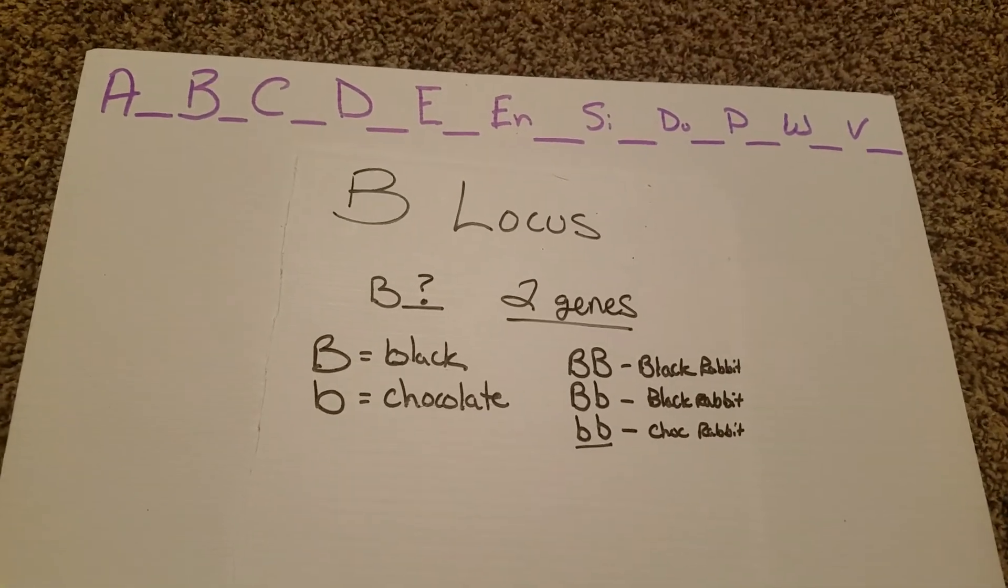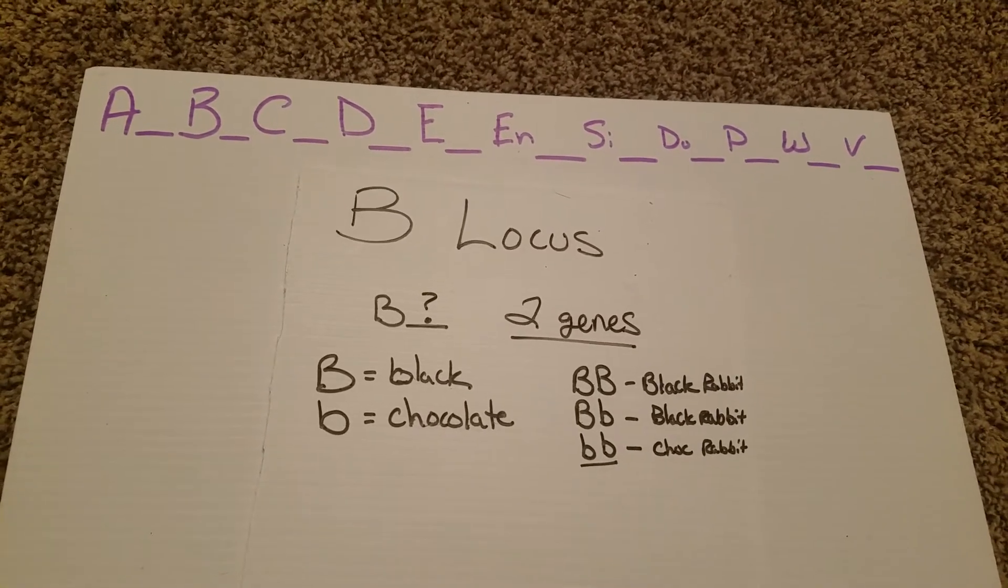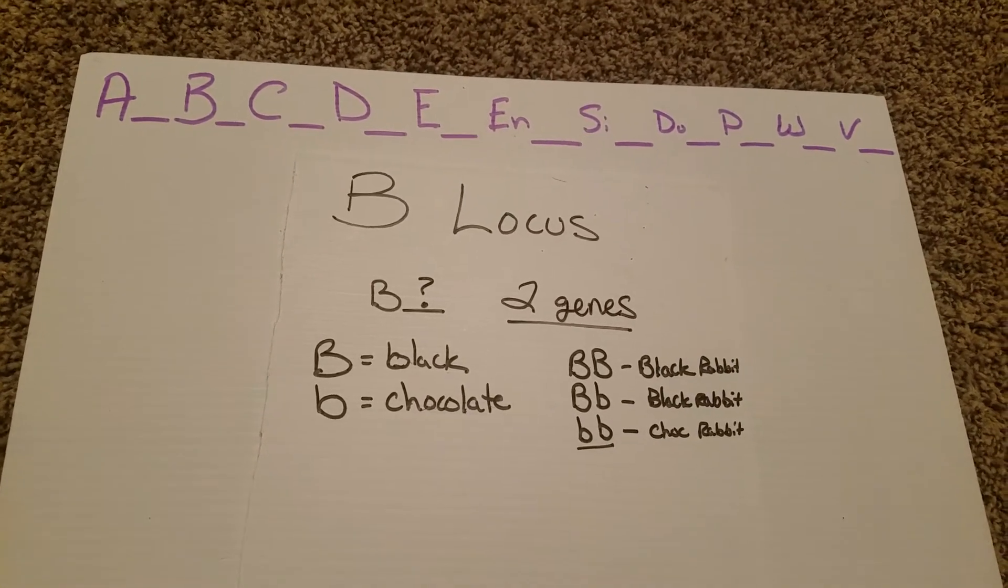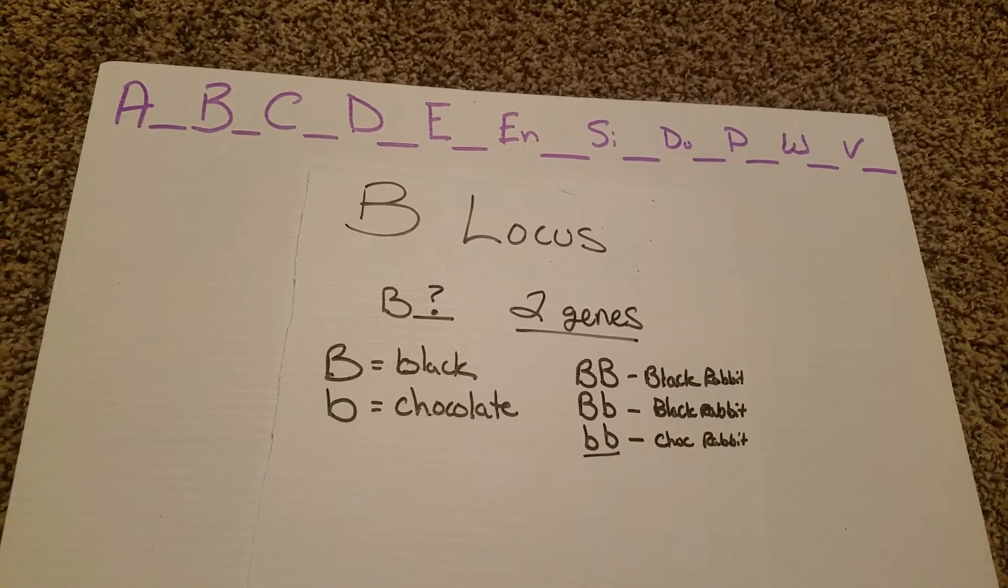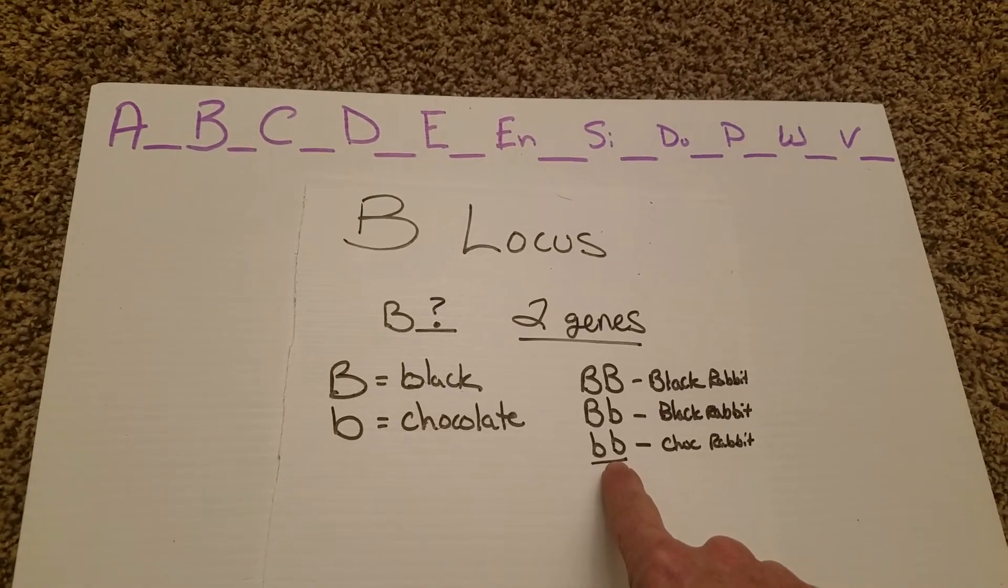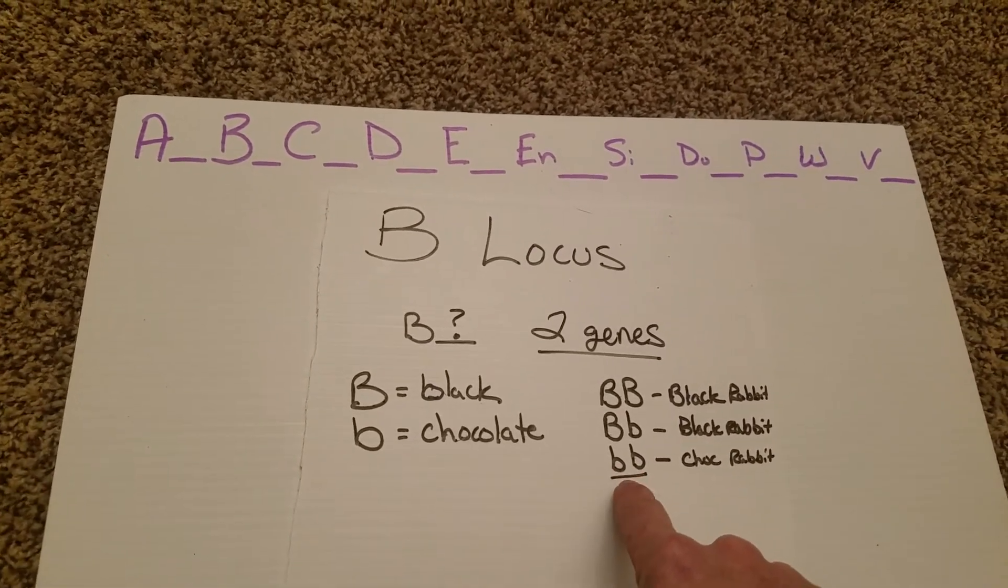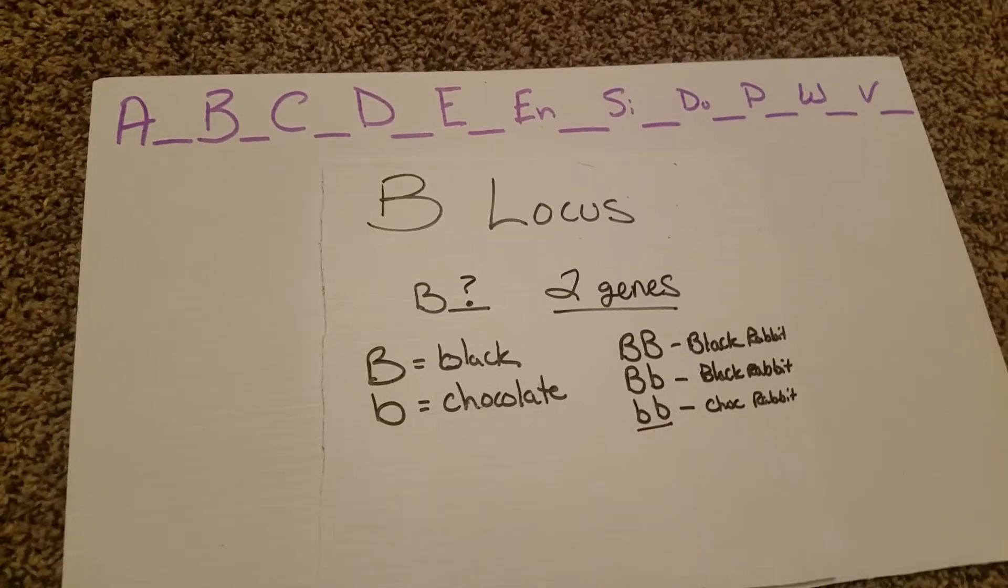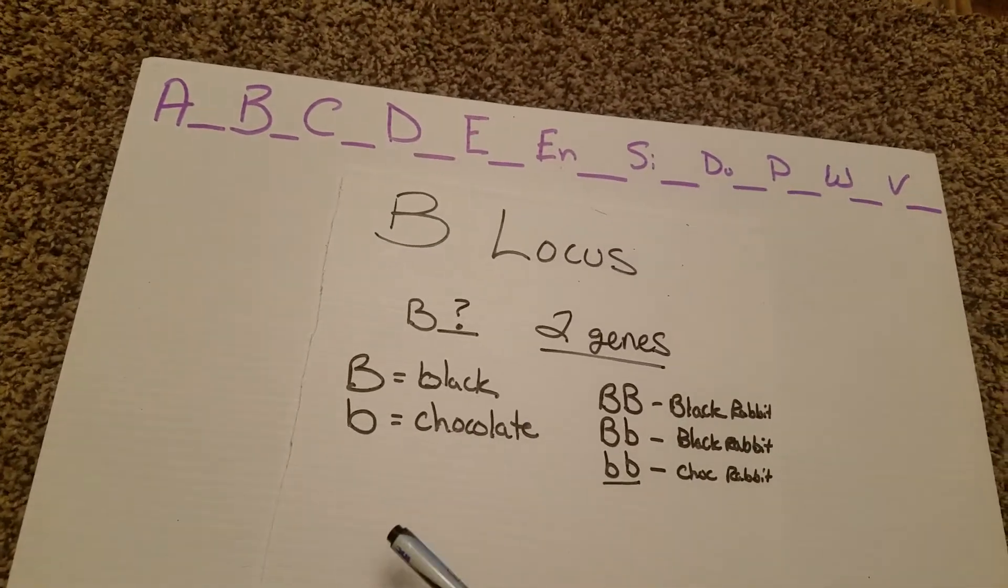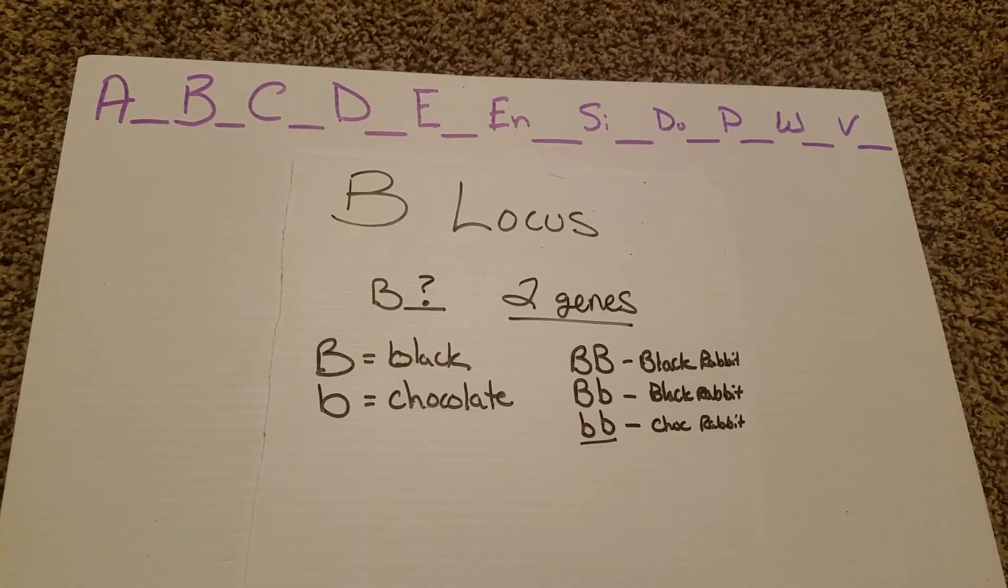It's the same as if we have a self. A self rabbit under the A locus, we know that self is created by the lowercase a, and so therefore both positions at the locus point must both be the most recessive for the category. In this category in particular, there's only two genes to pick from, the dominant and the recessive.